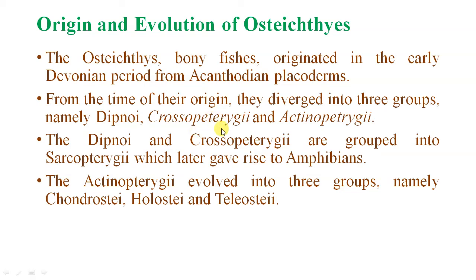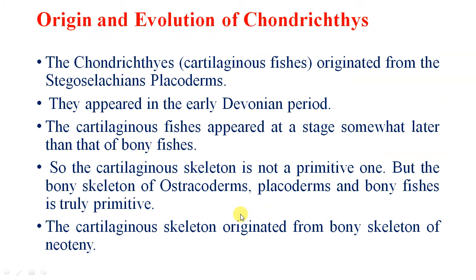The Actinopterygii evolved into three groups: Chondrostei, Holostei, and Teleostei. Regarding the origin and evolution of Chondrostei — the Chondrostei are cartilaginous species whose endoskeleton is made up of cartilage. They originated from the Stegoselachian placoderms and appeared in the early Devonian period. The cartilaginous skeleton appeared somewhat later than the bony species, so the cartilaginous skeleton is not a primitive one. The bony skeleton of ostracoderms, placoderms, and bony species is truly primitive. The cartilaginous skeleton originated from the bony skeleton by neoteny.